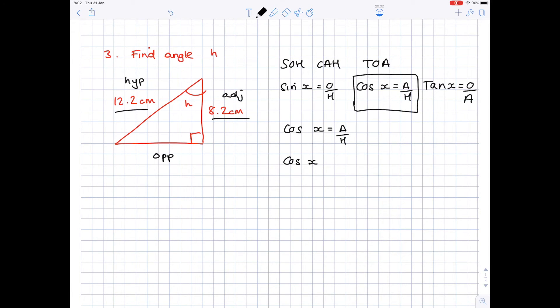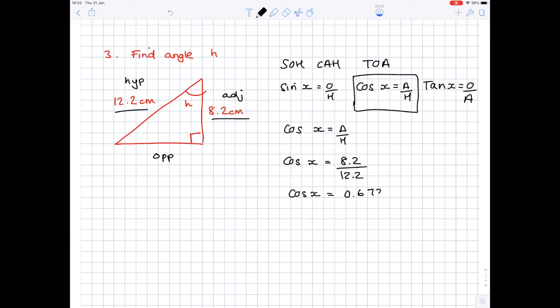This time including the information we've been given, we're after the angle so we leave that as x. A is 8.2 centimeters, H is 12.2. Pop that into your calculator and you'll get cos x equals 0.67213. In order to find x you need to inverse cos on that number, and try and keep it in your calculator so you don't have any rounding errors. You'll get a final answer which is 47.8 degrees to 3 sig fig.